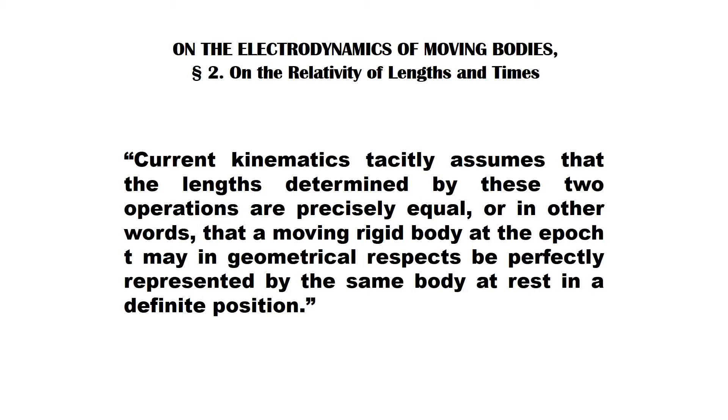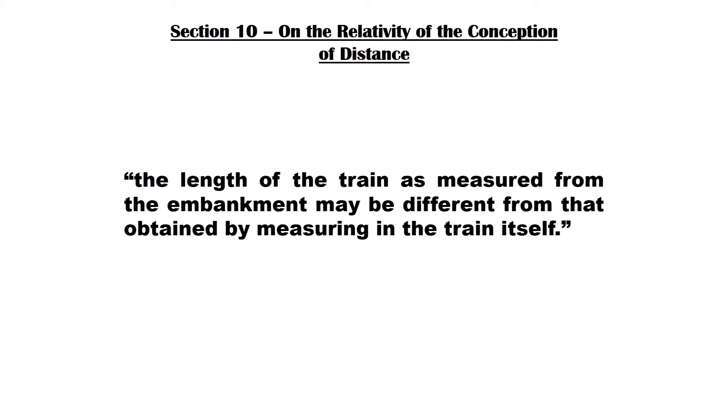Einstein notes that the then-current kinematics would have assumed that the lengths determined by measuring on the moving train and by measuring when the train was at rest would be the same. But he prepares us to face a challenge to this assumption, warning that the length of the train as measured from the embankment may be different from that obtained by measuring in the train itself. At this stage he does not justify this statement, but will give a detailed explanation later.